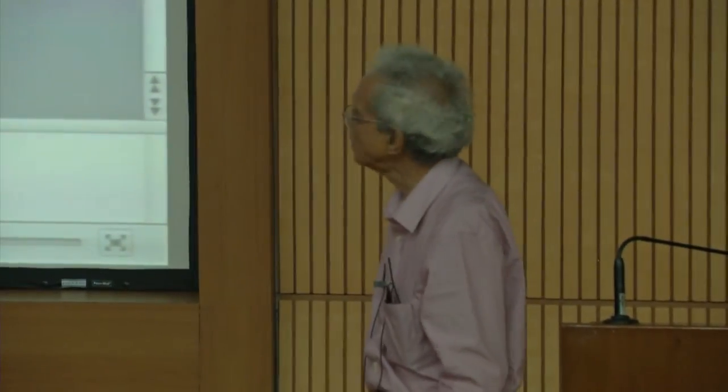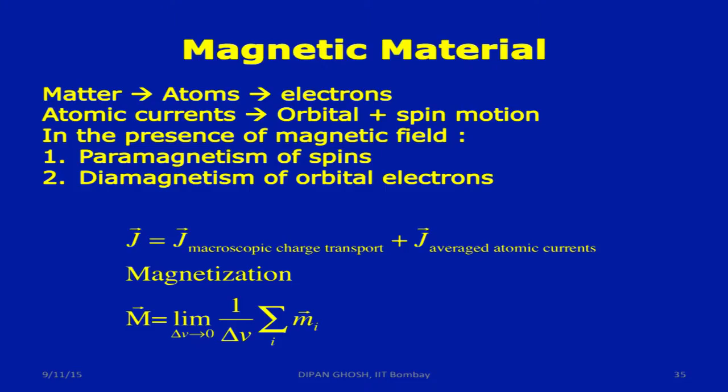Then of course you are aware of the classification between ferromagnet, paramagnet, etc. I am not going into it. All substances are diamagnetic. Whether they are paramagnetic, ferromagnetic, etc., not important. All substances are diamagnetic. Because diamagnetism is a consequence of Faraday's law and it has nothing to do with what material you are talking about.